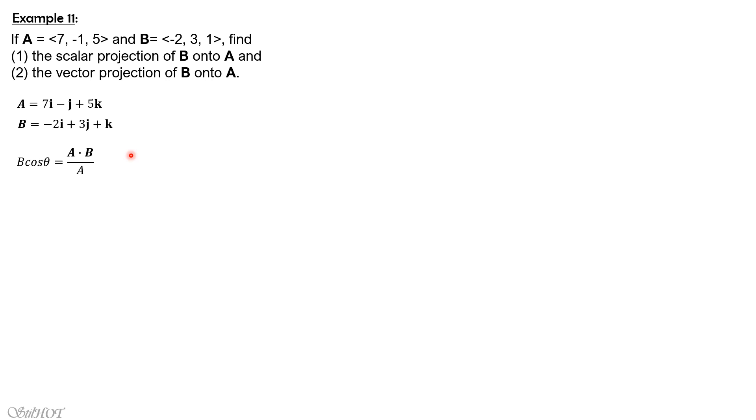So b cosine theta or b sub a equals 7 times -2 plus -1 times 3 plus 5 times 1, divided by the square root of 7 squared plus -1 squared plus 5 squared. So this magnitude of a is 5 square root of 3 if you compute this with your calculator.